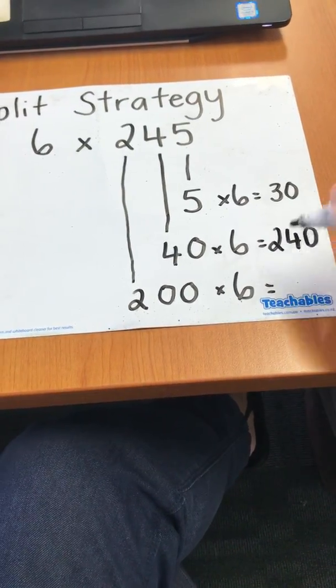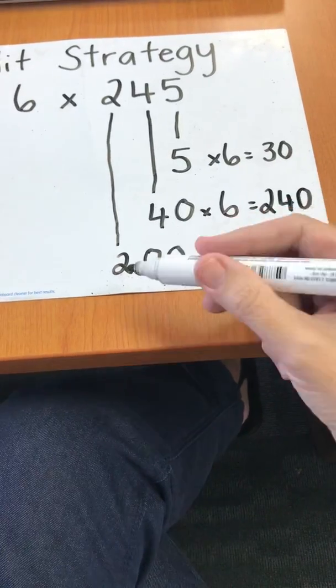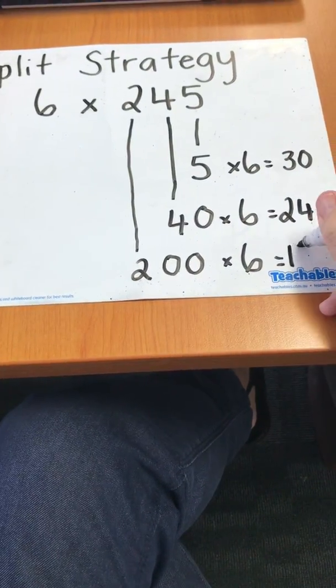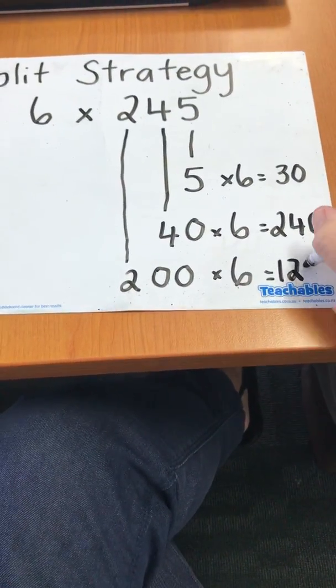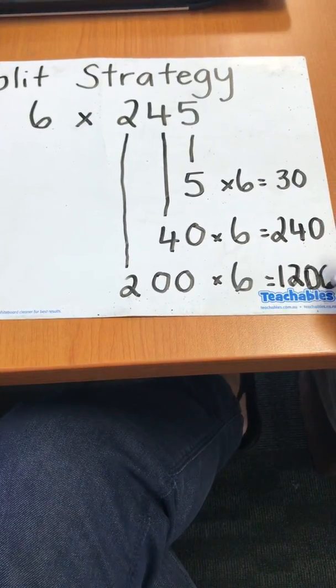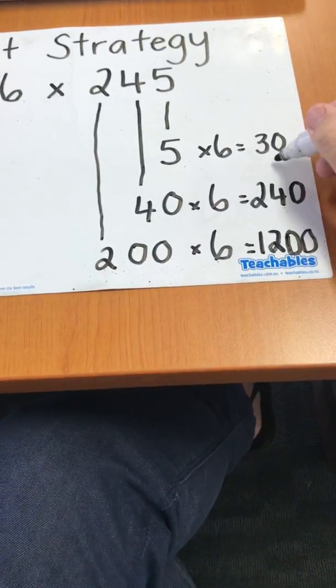Add on the zero, and 200 times 6 is 2 times 6 which is 12. Add on the two zeros. Then add all those numbers together.